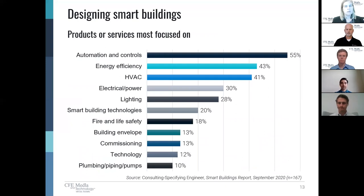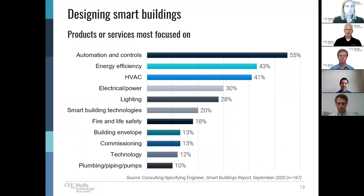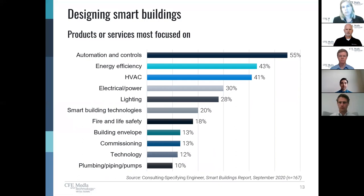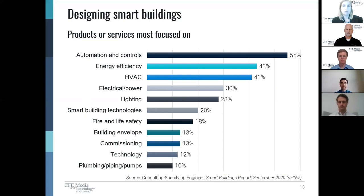We wanted to know at Consulting Specifying Engineer what was really going on in the engineering community, so we conducted research that came out in September on what engineers, consultants, and others allied to the building field were doing in the smart building industries, and what products and services they were focusing on. Not surprisingly, automation and controls came out at the top. It's really interesting to look at what different products or tools engineers are using and what may be rising to the surface as we continue to work within smart buildings.